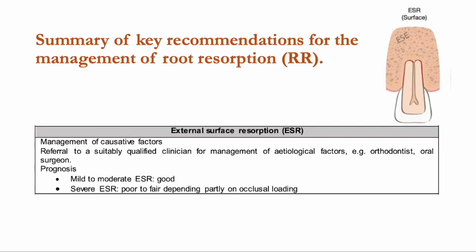For external surface resorption, it is commonly caused by pressure exerted by trauma, luxation injuries, orthodontic treatment, adjacent impacted teeth, cysts, or tumors. There is no classic radiographic appearance, but it may present as asymmetrical loss of external root surface adjacent to the source of pressure. It could be minor and barely detectable, and a perforation may be observed in advanced cases. Flattening or blunting of the root apices can be observed, and the affected tooth may be relatively shorter than neighboring teeth. The treatment objective is to manage the excessive pressure causing the root resorption.